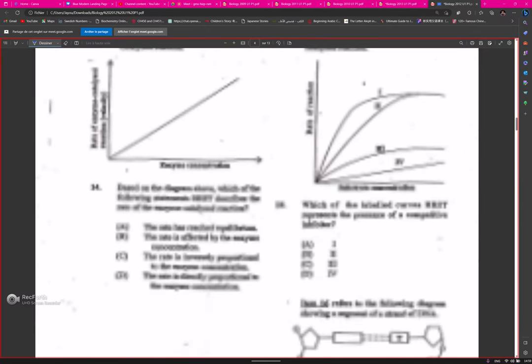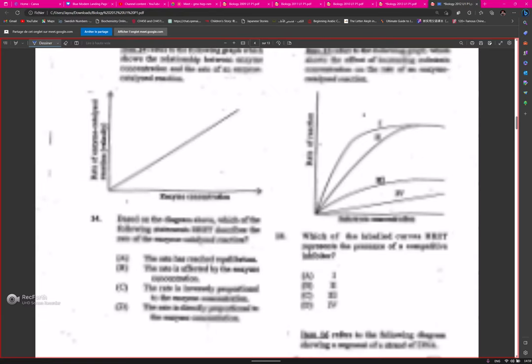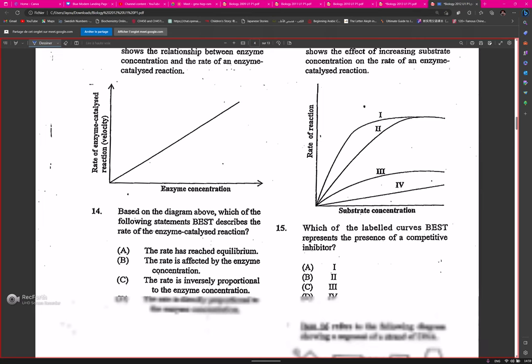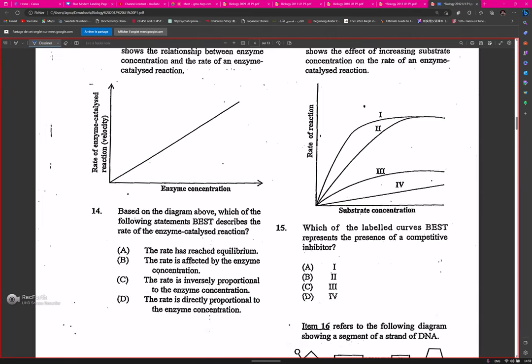Question fourteen: based on the diagram, which of the following best describes the rate of an enzyme-catalyzed reaction? Looking at the rate of reaction with enzyme concentration, the rate is directly proportional to enzyme concentration. Remember when there was a question with this exact diagram and people were choosing a graph that looks different? This is the correct graph.